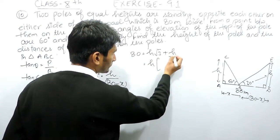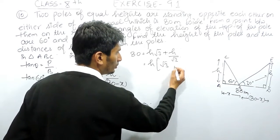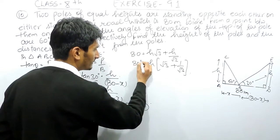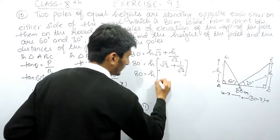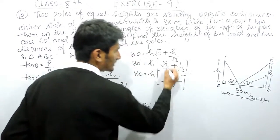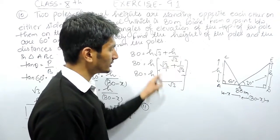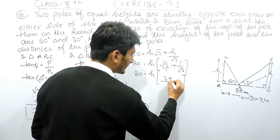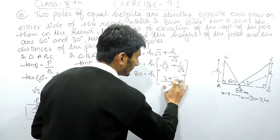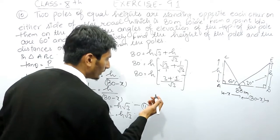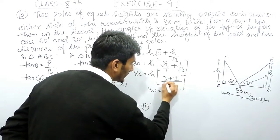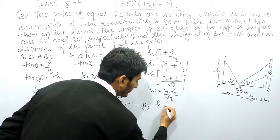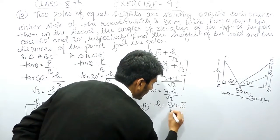Taking H as common: 80 equals H times (root 3 plus 1 upon root 3). Taking LCM as root 3, this becomes H times (3 plus 1) upon root 3, which is 4H upon root 3. So 80 equals 4H upon root 3.